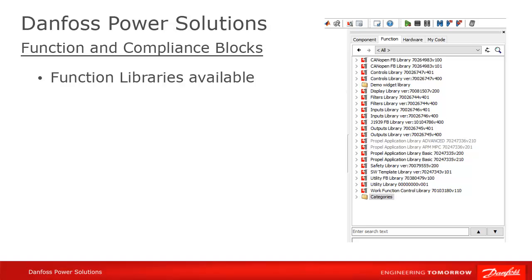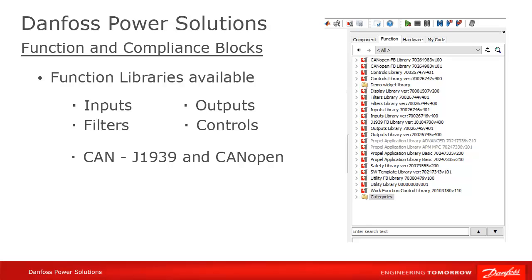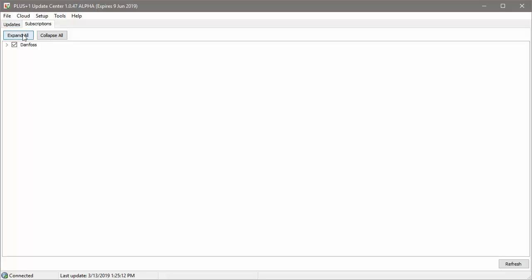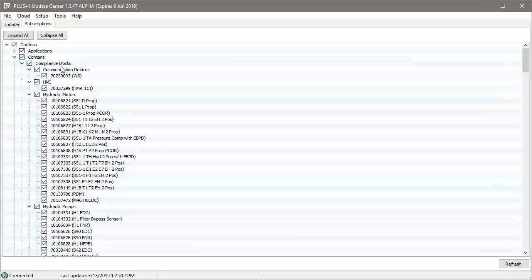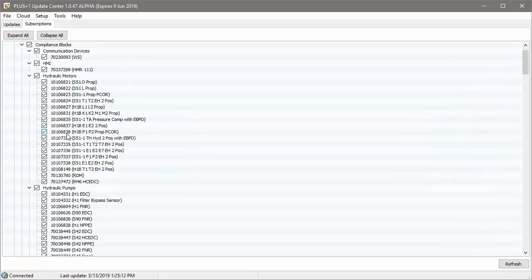We have a core set of function blocks which fall into four libraries: inputs, outputs, filters, and controls. There are two CAN communication protocol libraries: J1939 and CANopen. Lastly, there are some specialty libraries for certain platforms — a safety library for the SC controllers, display libraries for the classic and vector-based screen editors (the latter containing customizable widgets), a utilities library, and others. The easiest way to familiarize yourself with the function block libraries is simply to install them from the Update Center. To use them in your application, remember that you'll need either a professional or a trial license.